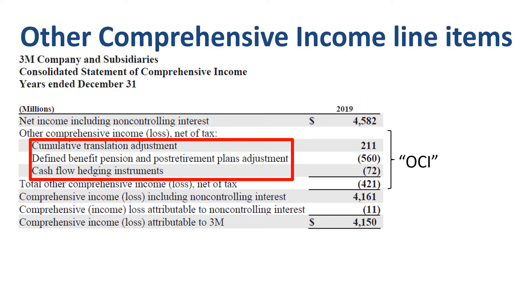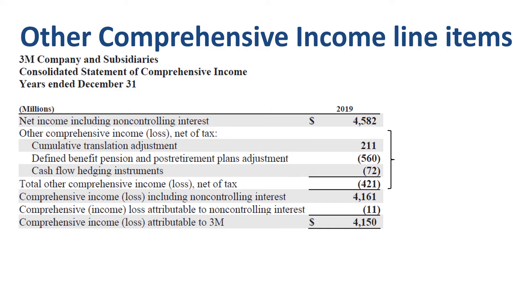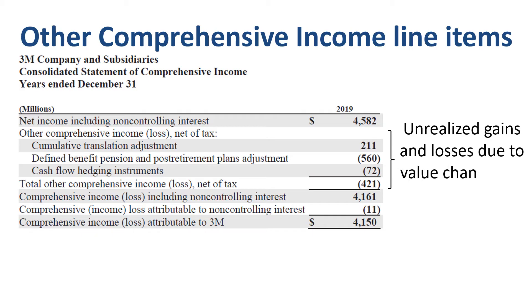Each of these represents unrealized gains and losses due to value changes on the balance sheet. We will take the cumulative translation adjustment, or CTA, as an example.